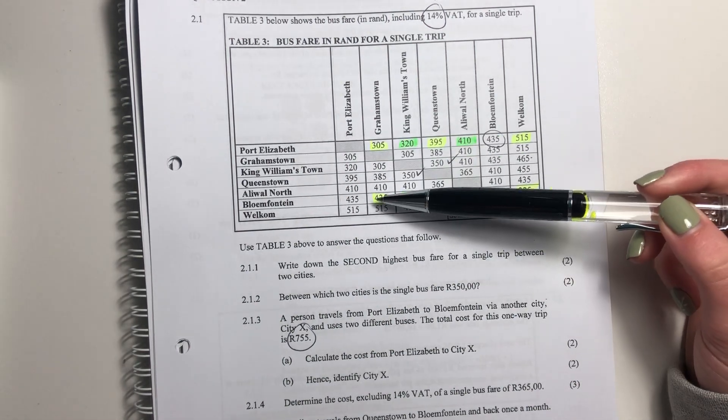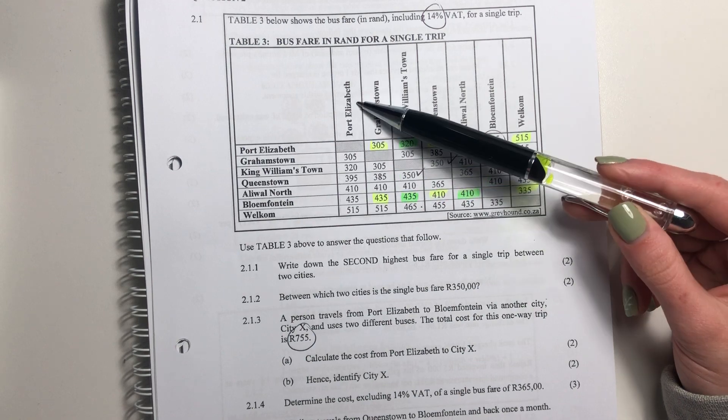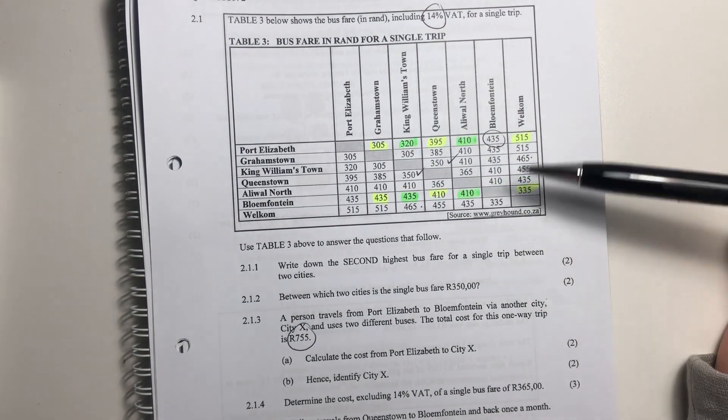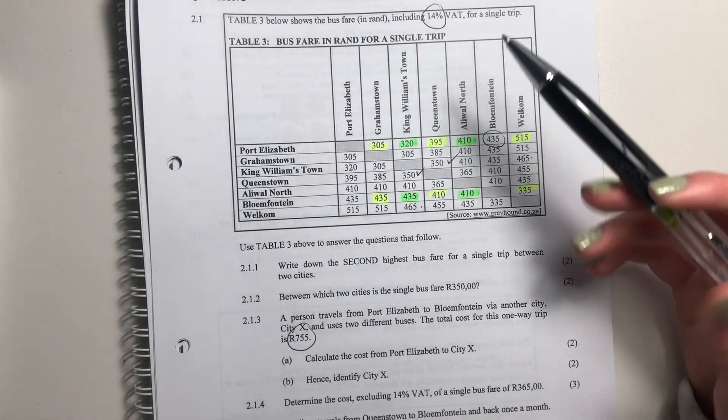So over here, going from King Williamstown to PE would be 320. So that's how you read this. I'll read it more as we answer the questions.